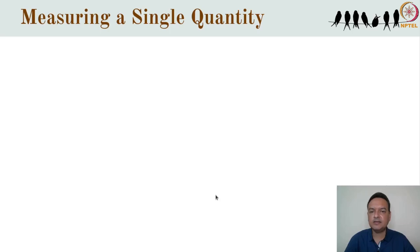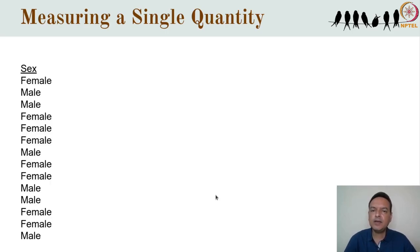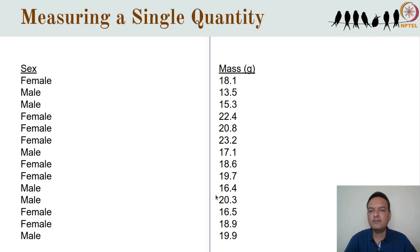Let's say we've carefully designed our study and now have the raw data. For a categorical variable such as sex, the raw data might be a series of labels in which each sampled individual is represented as 'male' or 'female'. For a numeric variable such as body mass, we would have a series of numbers each representing a single individual. The raw data depicts some property of the sampling unit, whatever that sampling unit might be.